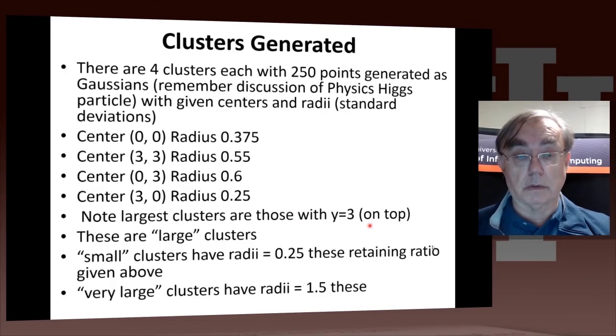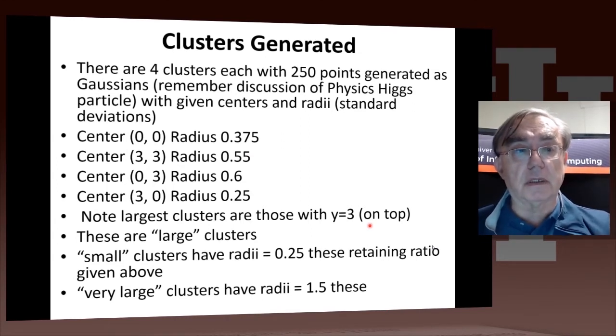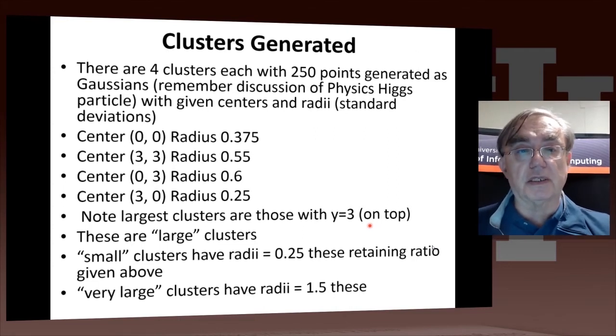Now we go to the case where we generate clusters, which is a common thing to do when you're clustering. If you're trying to develop a new clustering algorithm, it's good to know the answer. We generate here four clusters. Each of them has 250 points. The 250 points have a bell-shaped distribution, which is the Gaussian distribution, which we already discussed at length in the physics-Higgs particle analysis part of this course. We fix the centers and the radii, with the radii being the standard deviation of these clusters. The 250 points are randomly generated. They'll be different each time you run the program, because Python does not always use the same starting point.